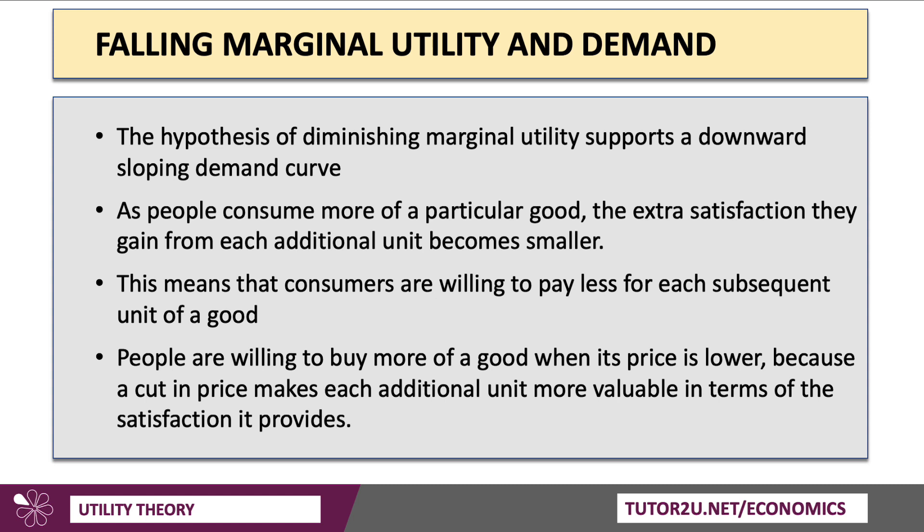The hypothesis of diminishing marginal utility supports the idea of a downward sloping demand curve, because as people consume more of something, the extra satisfaction they gain becomes smaller. In theory, other things remaining the same, they won't be willing to pay as much for those subsequent units. People are willing to buy more of a good when the price is lower, because the cut in price — a discount — makes each additional unit more valuable in terms of the satisfaction or benefit it provides.